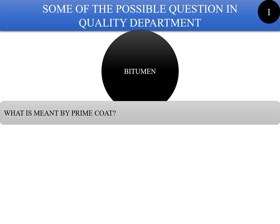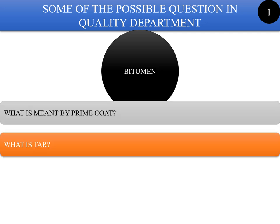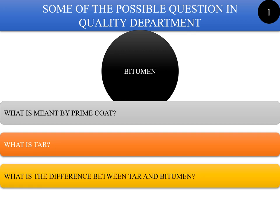Some of the possible questions covered in Set 1 are: What is tar? What is meant by a prime coat? What is the difference between tar and bitumen? And what is bitumen?